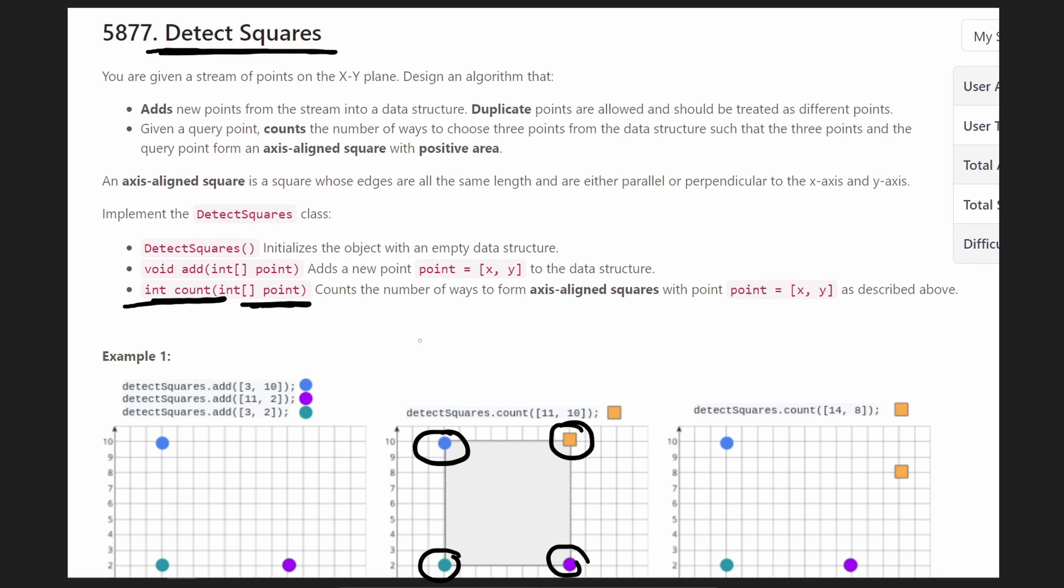What if we had two copies of this point and we had two copies of the bottom right point? How many squares could we make then? In that case, we could make four squares. Where I got this four is basically by multiplying how many copies we have of this and how many copies we have of this. So that's going to be important. So since the count of how many each point that we have matters, I'm going to be using a map or a hash map to basically count the number of occurrences for each point.